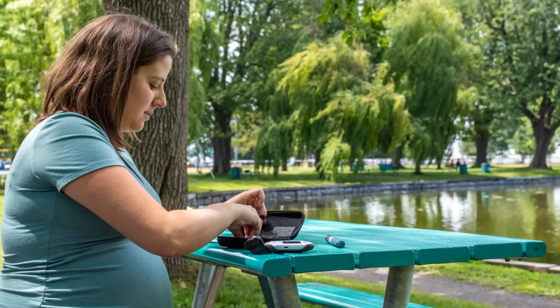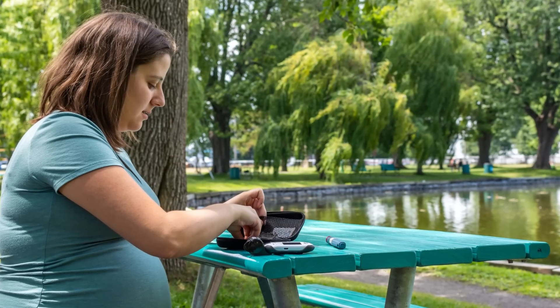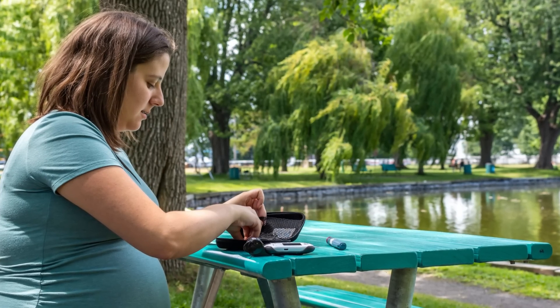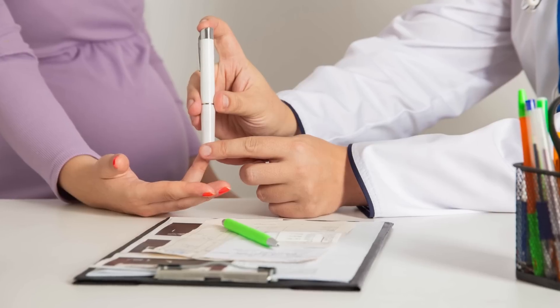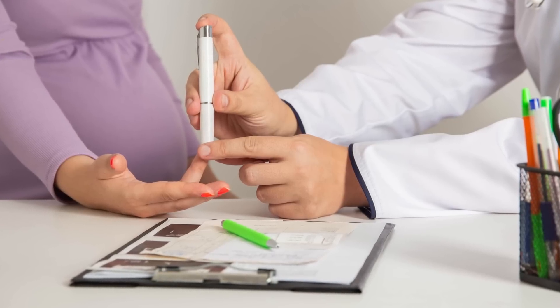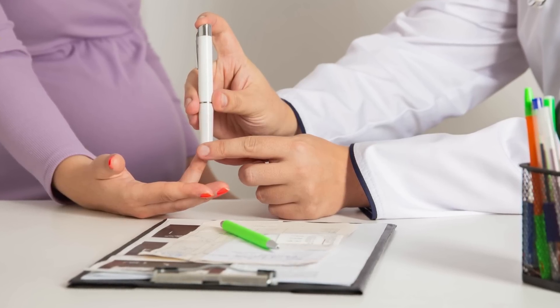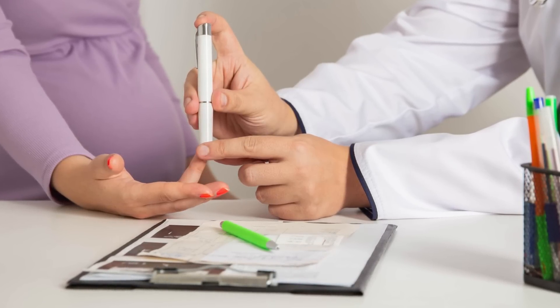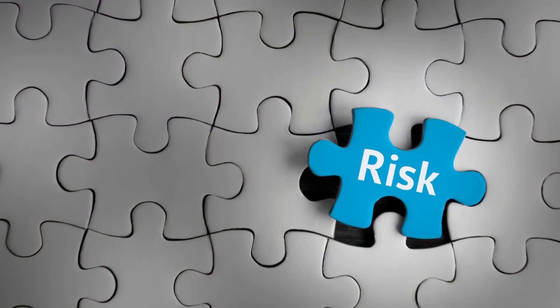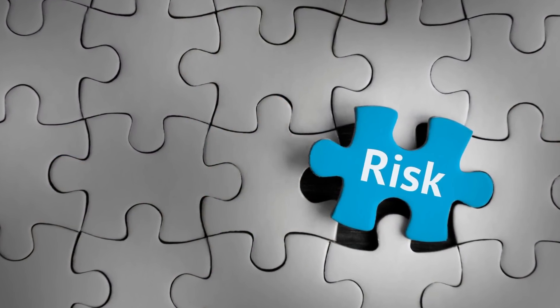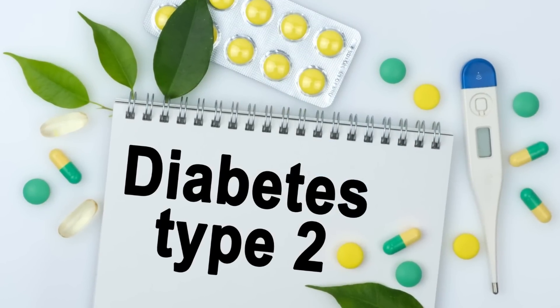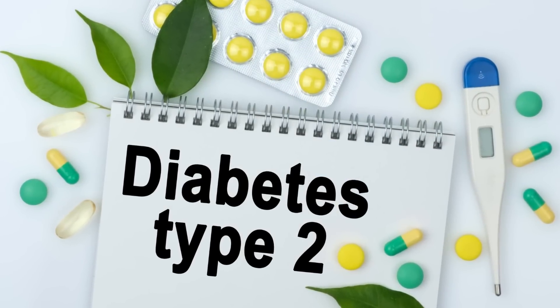Gestational diabetes occurs during pregnancy when the body is unable to produce sufficient insulin. Although it usually resolves after childbirth, it increases the risk of developing Type 2 diabetes later in life.